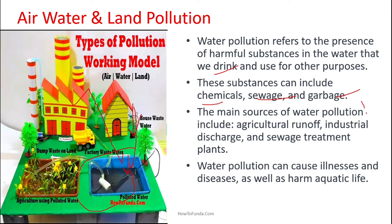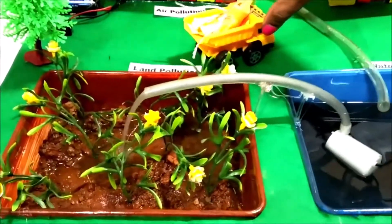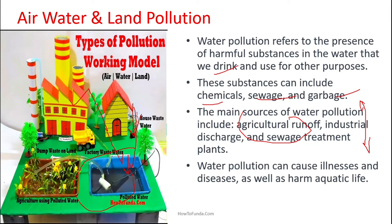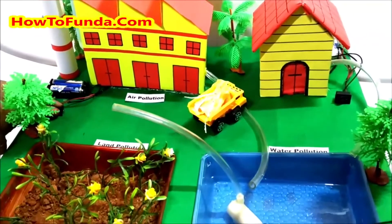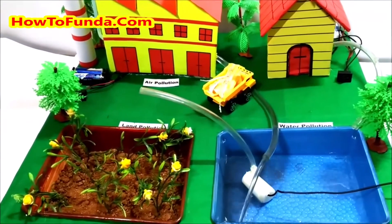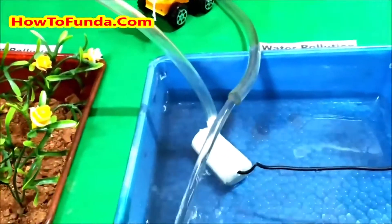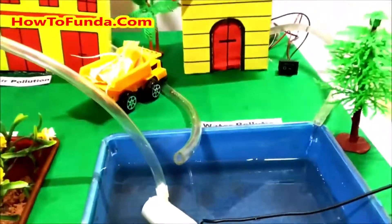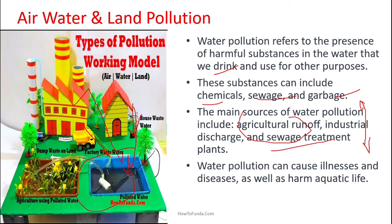The sources of water pollution include agriculture — when polluted water flows through agricultural fields, even the land becomes polluted. Factories discharging waste into land or water, and sewage treatment plants not treating waste properly, also send sewage into land or water, leading to many health problems similar to those caused by air pollution.